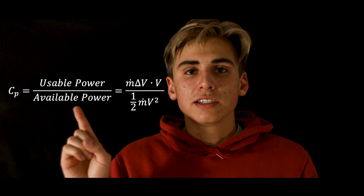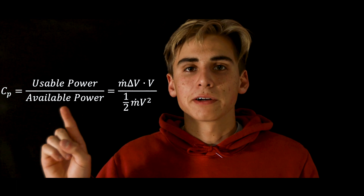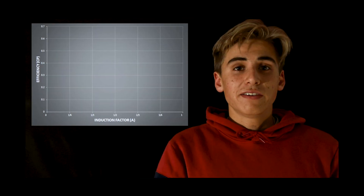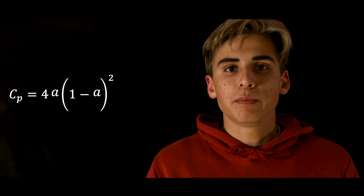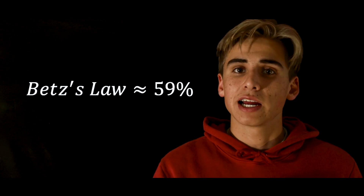Now we can talk about efficiency. Efficiency is generically defined as usable power divided by available power. For a wind turbine, it is denoted as the coefficient of power. The efficiency equation simplifies to an equation where a is the induction factor and represents the percentage the wind has been slowed at the rotor. When efficiency is plotted versus the induction factor, we get a graph showing that we get peak efficiency when the wind is slowed at the rotor by one-third. Plugging one-third into our efficiency equation shows that the peak efficiency of any wind turbine is 16/27, or approximately 59%. This theoretical limit was postulated in 1919 by Albert Betz and is now known as Betz Law.